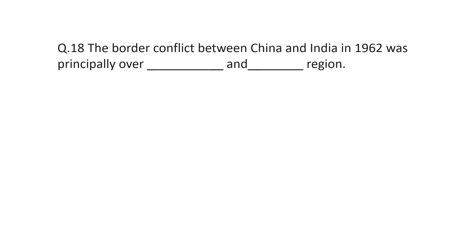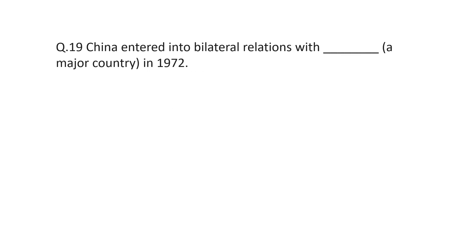Question number 18: the border conflict between China and India in 1962 was principally over which regions? The answer is Arunachal Pradesh and Aksai Chin. Question number 19: China entered into bilateral relations with a major country in 1972. The name of this major country is important because it changed world dynamics — it was the USA.